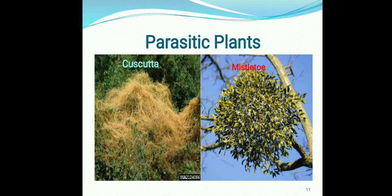Let me explain this with an example. The first example is cascuta. As you can observe the yellowish structure — this is the cascuta, also known as dodder or amarbele. This yellowish structure represents that it doesn't contain any chlorophyll, which means it is not capable of performing photosynthesis. Hence, for their food requirements, they are dependent on their host plant. Another example is mistletoe, which is a partial parasitic plant capable of making its own food, but it doesn't have a proper root system and so it is also dependent on its host plant.